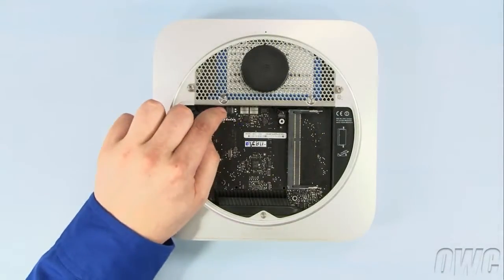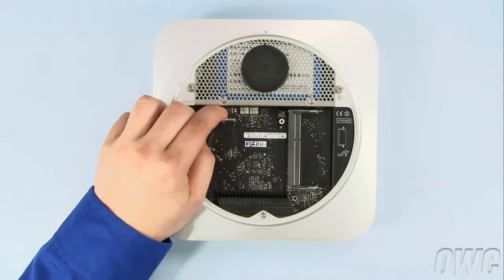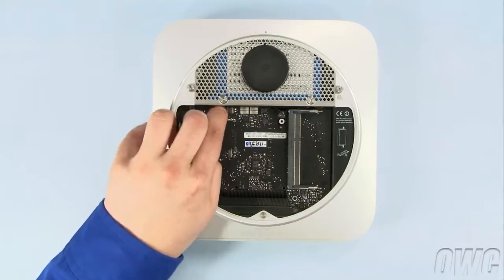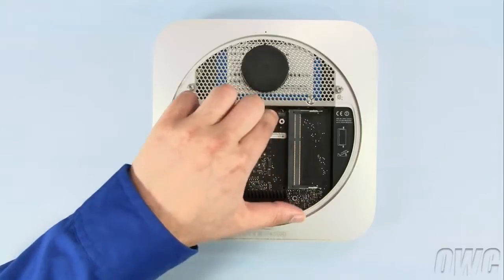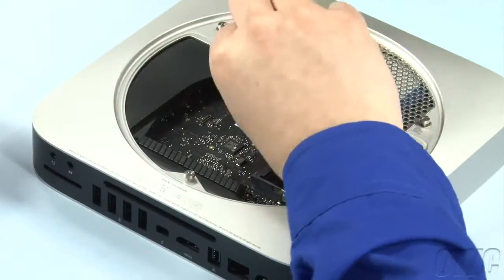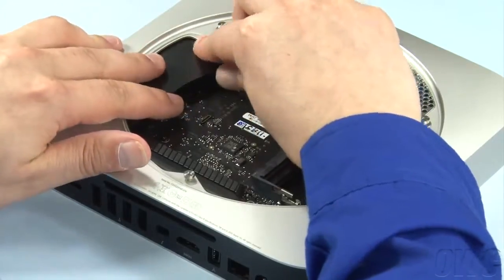Next, reattach the SATA and IR board cables by lining them up with their connectors on the board and gently snapping them into place. Slide the cowling back into place, and reattach the lower screw that holds it in.